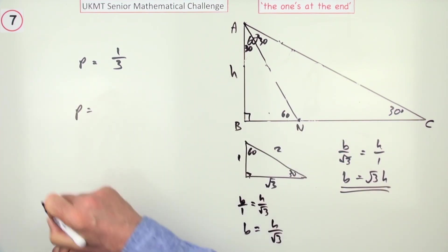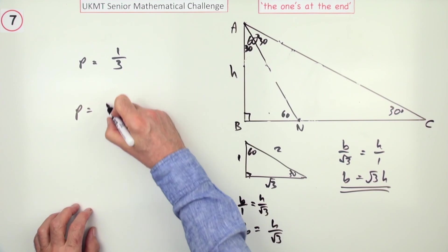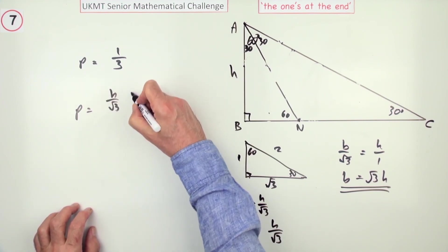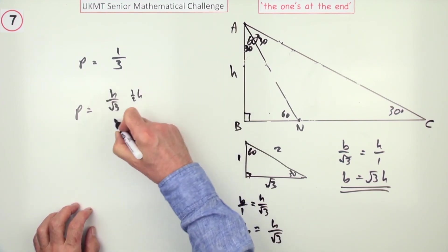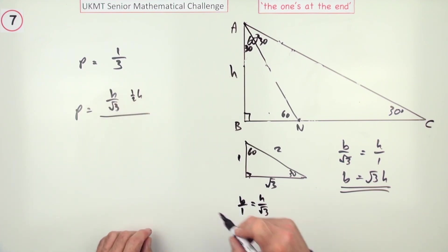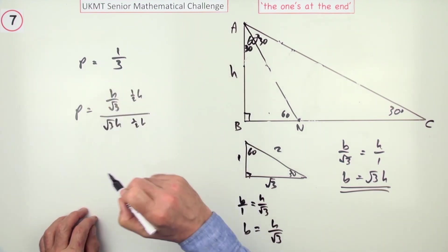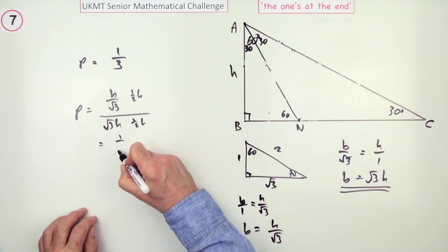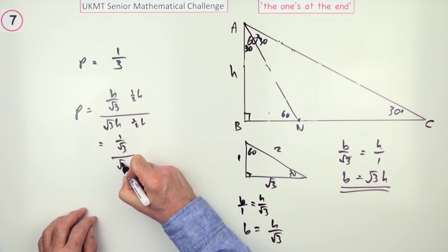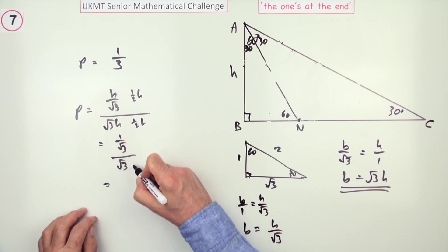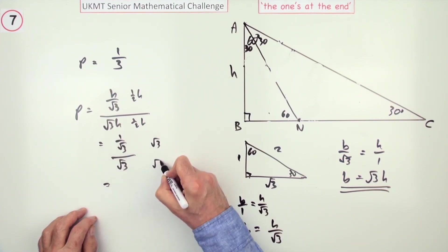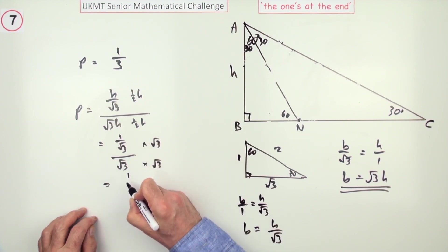So, the probability would be the area of the small triangle, which is H upon root 3 for the base, times half height, over that was an H. This one, which is root 3 H, times a half height. All those parts cancel out. And you're just left with 1 over root 3, over root 3, multiply the top and the bottom by root 3, and you're left with 1 third.